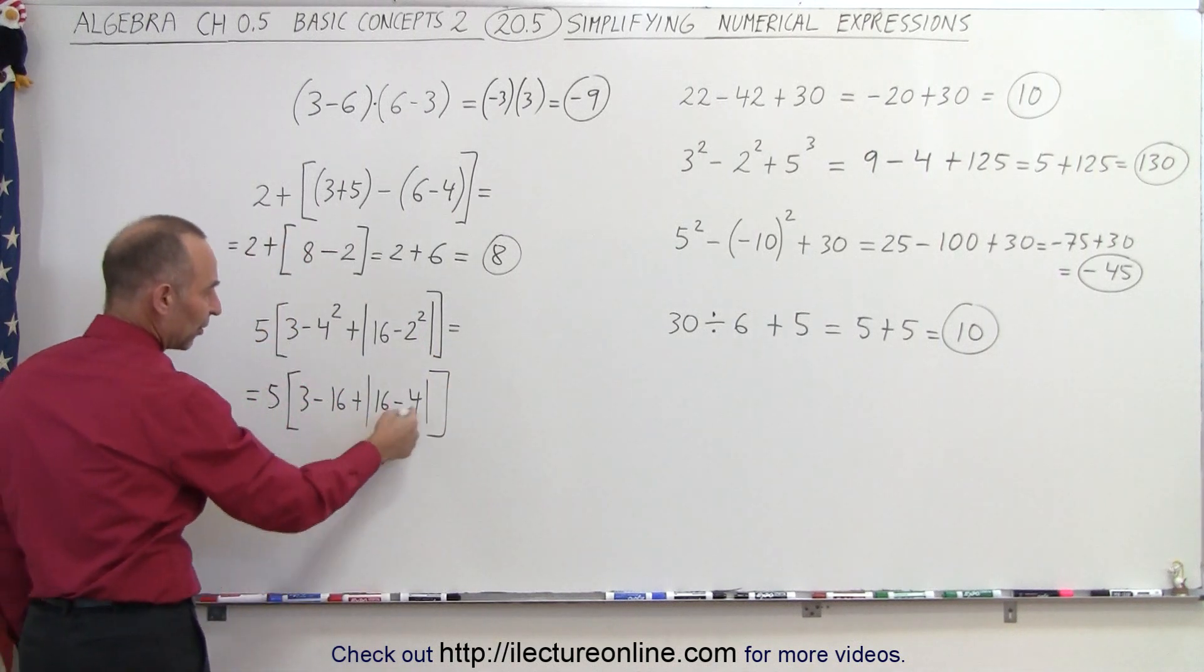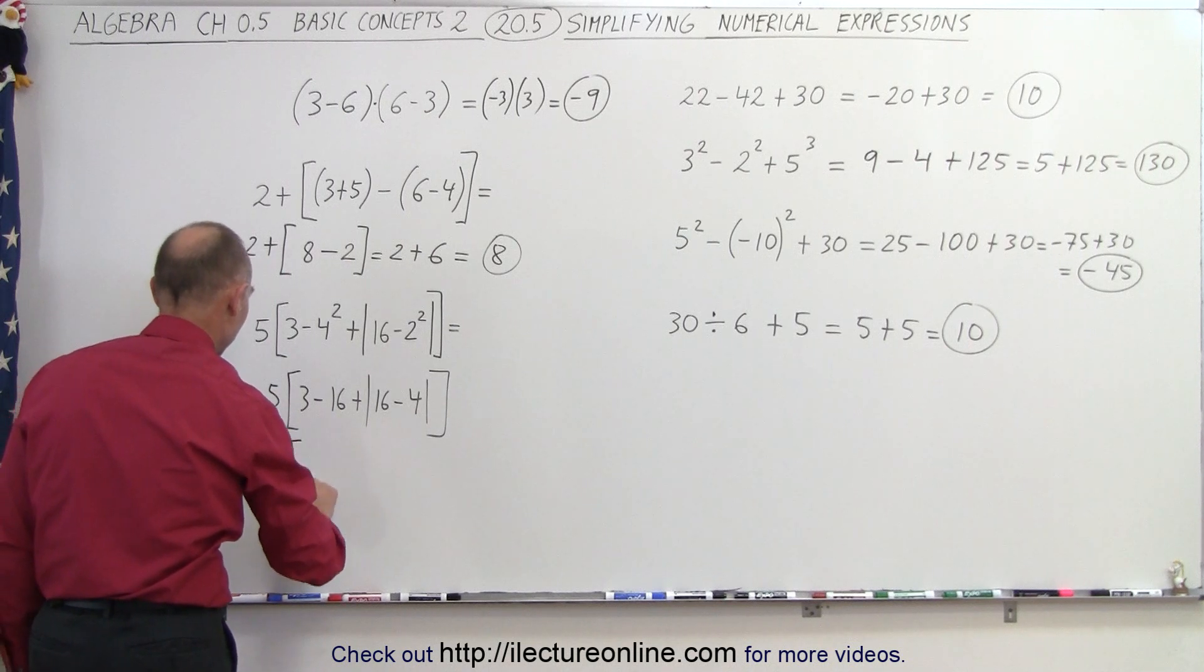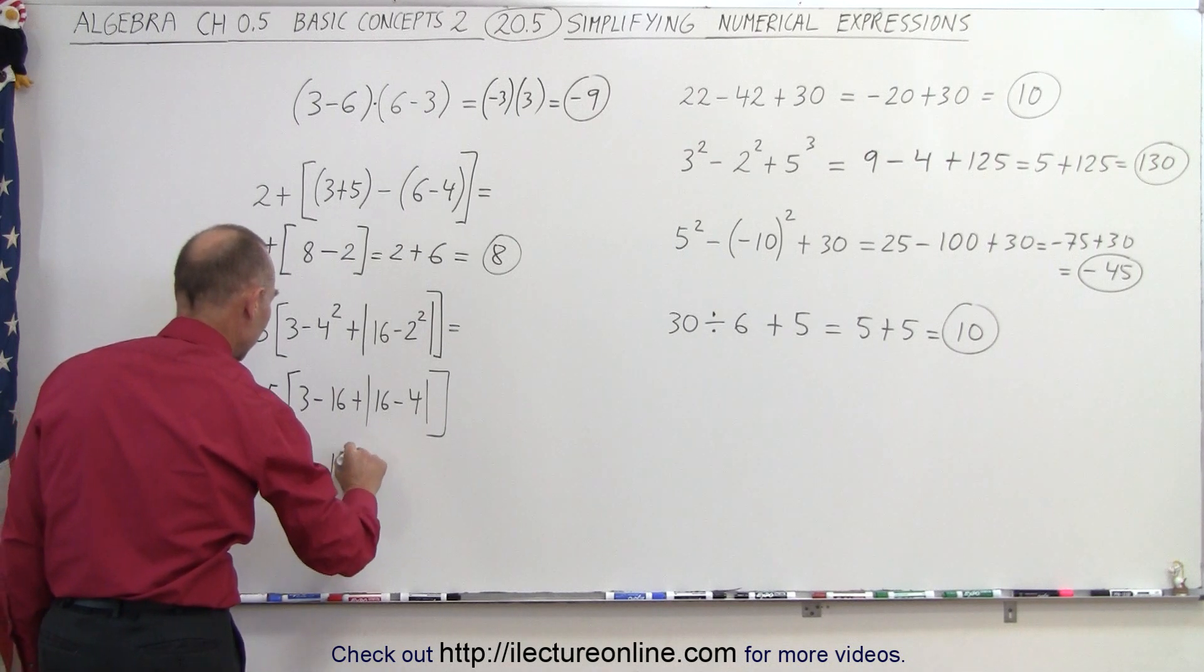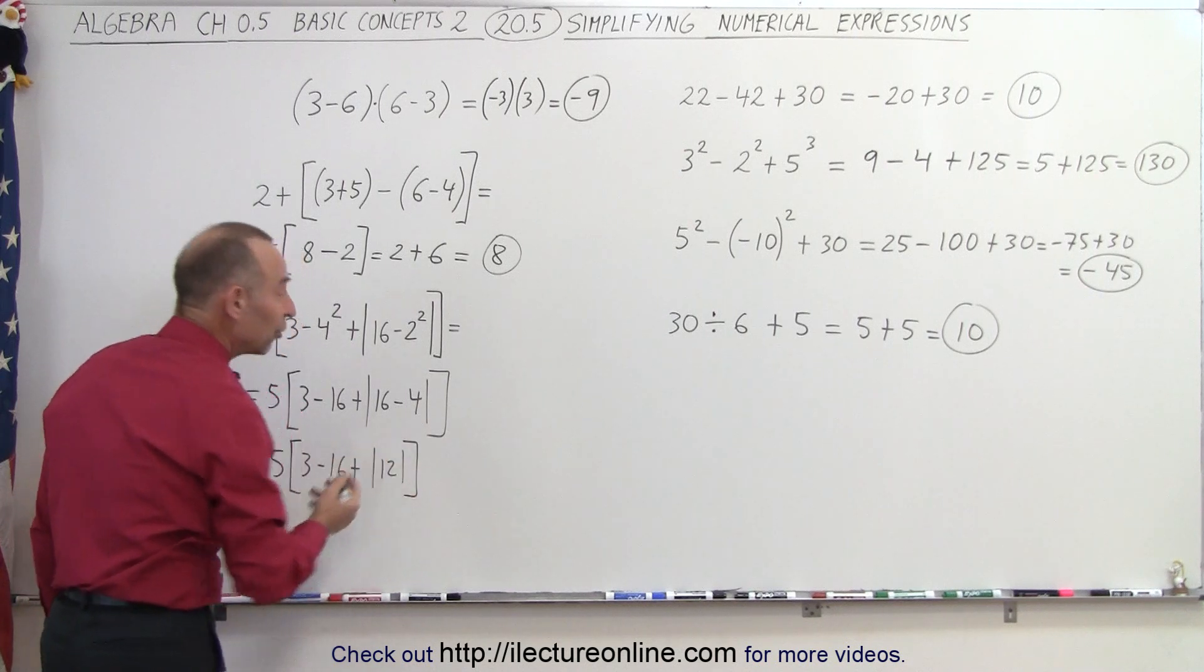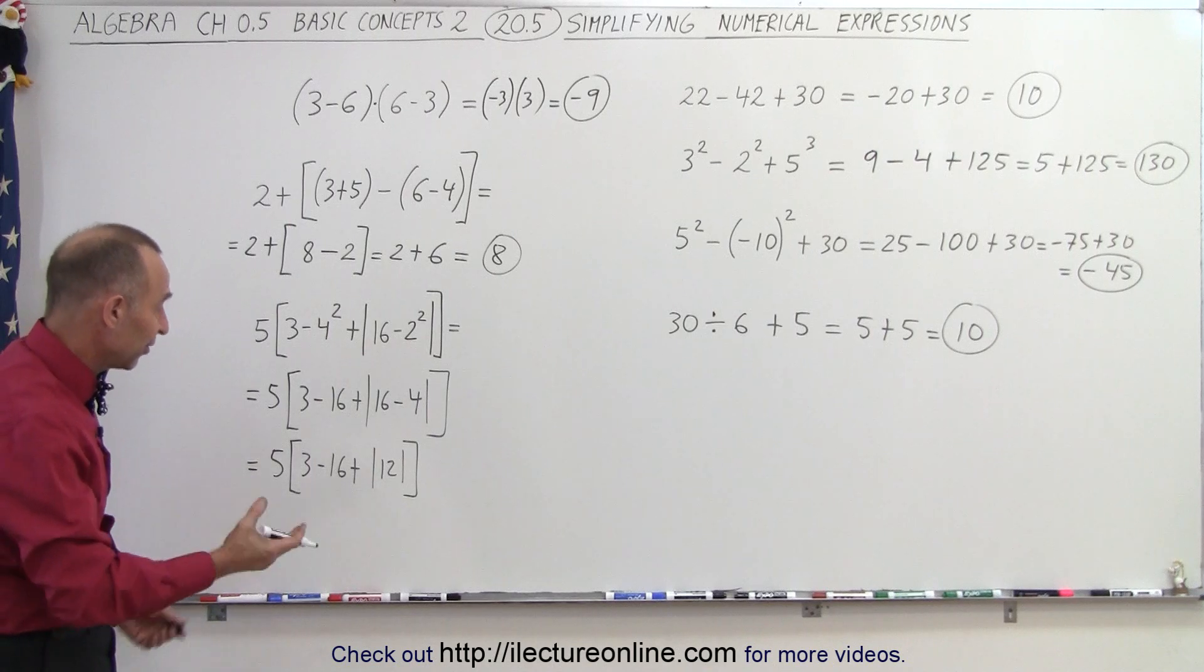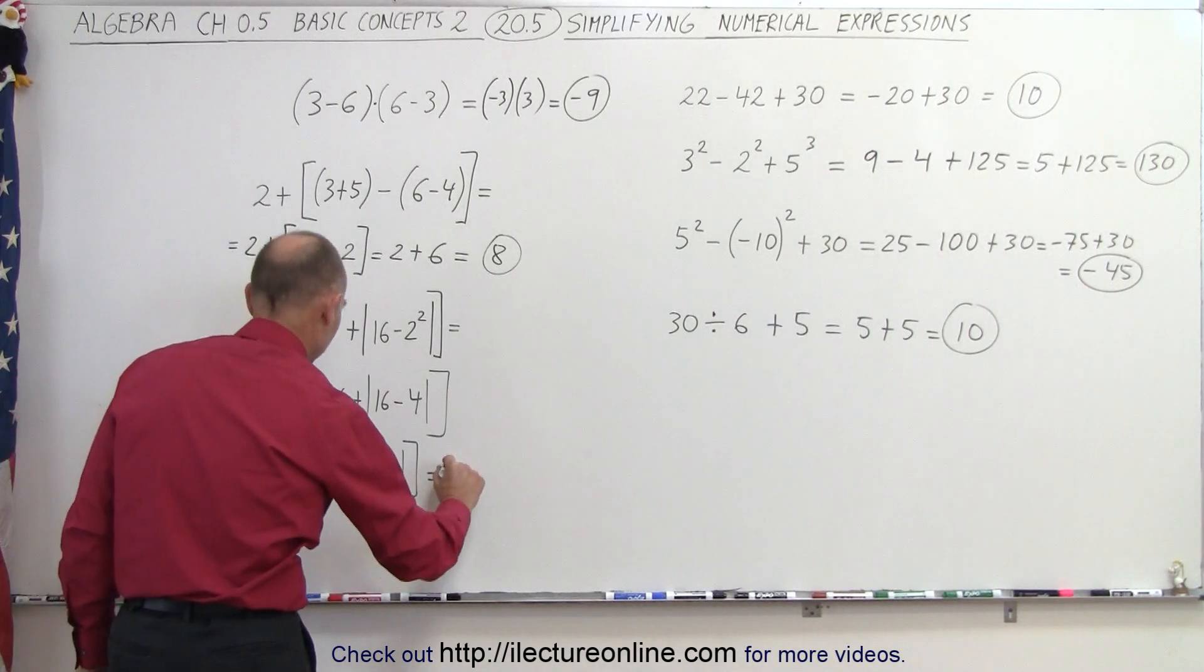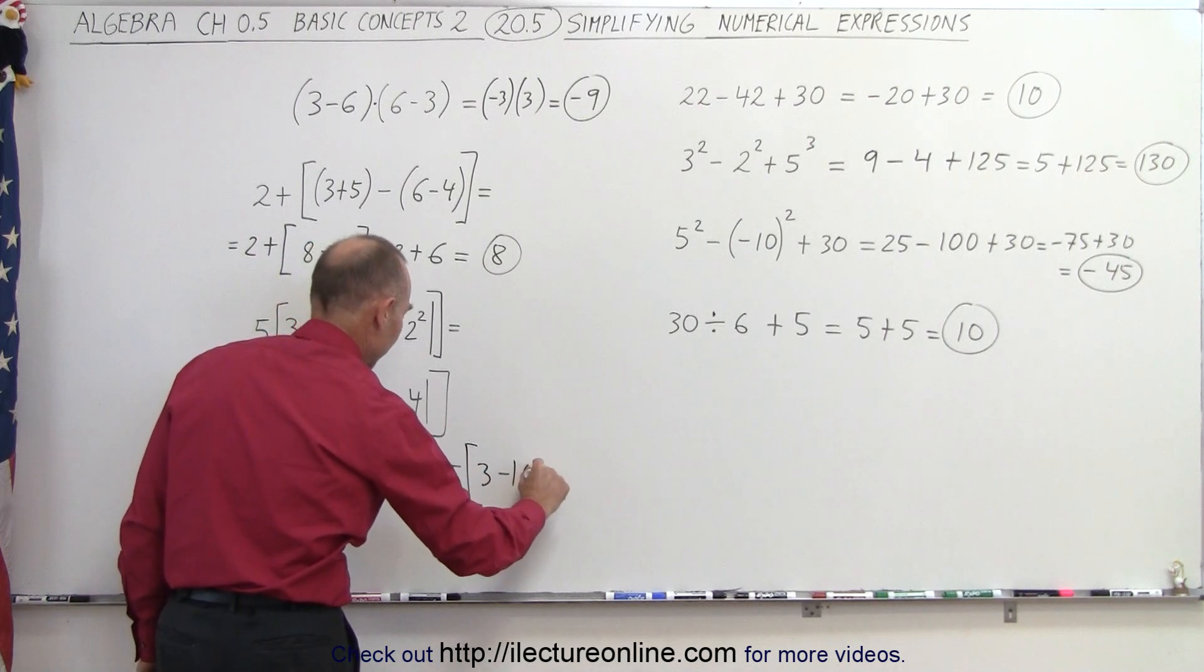The next step, we want to simplify what's inside the absolute value signs. So this is equal to 5 times 3 minus 16, plus absolute value signs of 12. And notice the absolute value of positive 12 is simply positive 12. So this is equal to 5 times 3 minus 16 plus 12.